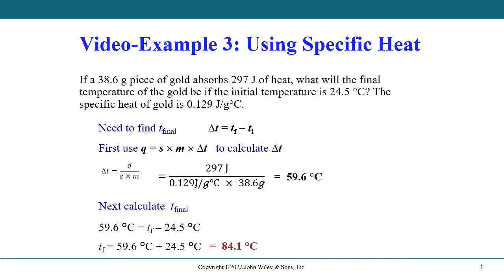Obviously we need to find the final temperature, and in order to do that we need to remember this equation over here, which says the change in temperature equals T final minus T initial. But first of all we need to find the delta T because we don't know what it is.